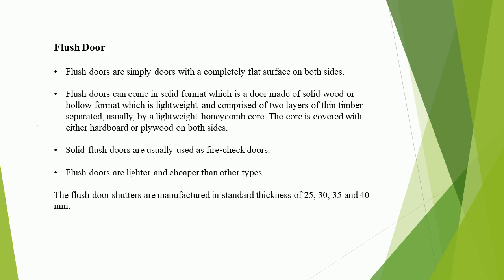Flush doors are simply doors with a completely flat surface on both sides. They can come in solid format — a door made of solid wood — or hollow format, which is lightweight and comprised of two layers of thin timber separated, usually, by a lightweight honeycomb core. The core is covered with either hardboard or plywood on both sides.